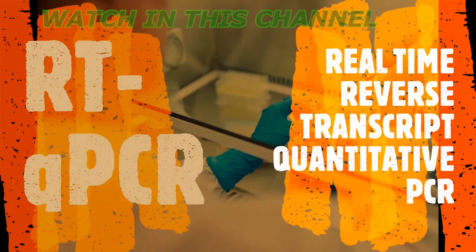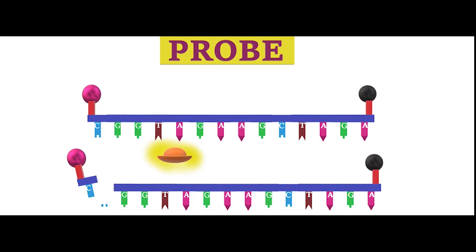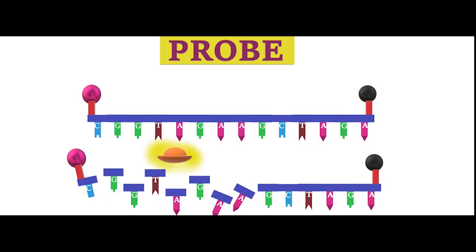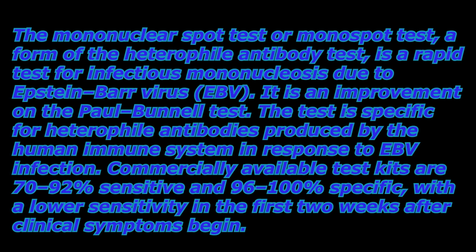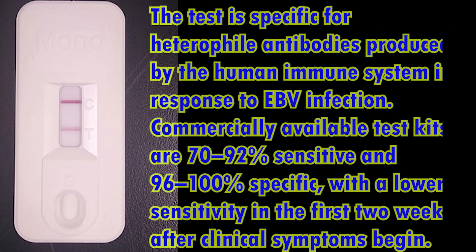PCR, RT-PCR (polymerase chain reaction), and real-time quantitative polymerase chain reaction methods are used for detection of viral antigen or antibody in the sample. Heterophil antigens are antigens of similar nature that cross-react with other similar antibodies. The mononuclear spot test for infectious mononucleosis due to Epstein-Barr virus is an improvement on the Paul-Bunnell test.